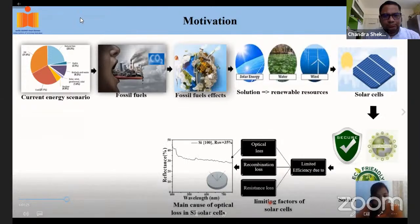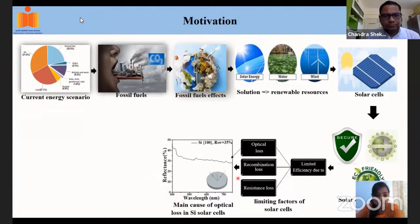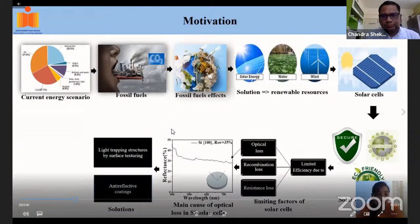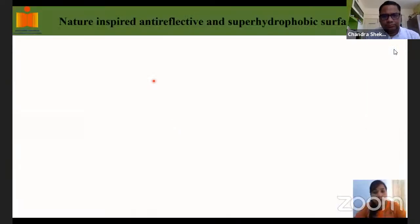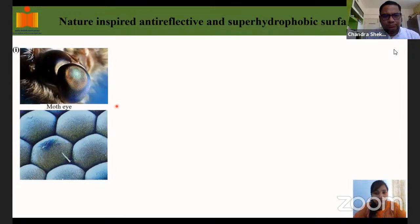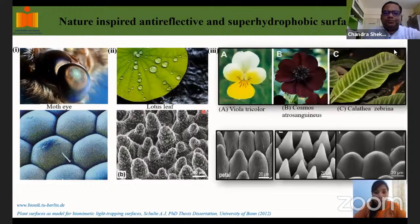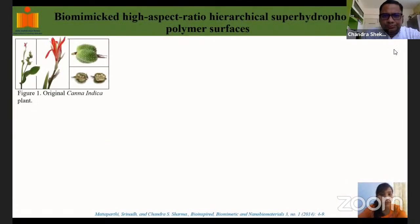Solar cells face three main losses: optical loss, recombination loss, and resistance loss. Optical loss — one of the major losses — is due to reflection of incident light from the cell surface, which is around 35% for silicon. This can be minimized using light-trapping structures and anti-reflective coatings. Anti-reflective and hydrophobic surfaces are inspired from nature: moth-eye structures provide excellent anti-reflectivity due to hierarchical structures, and lotus leaves exhibit excellent self-cleaning properties.